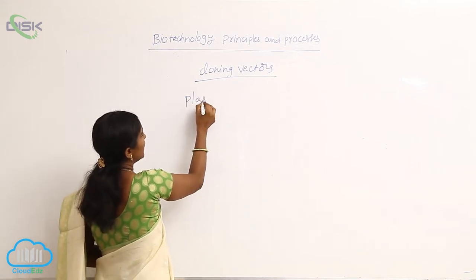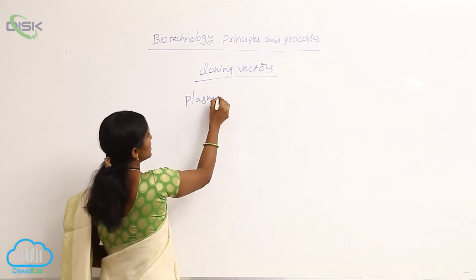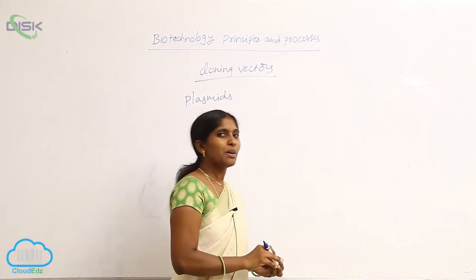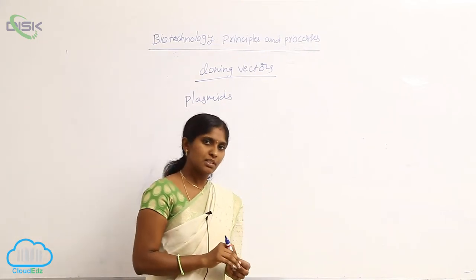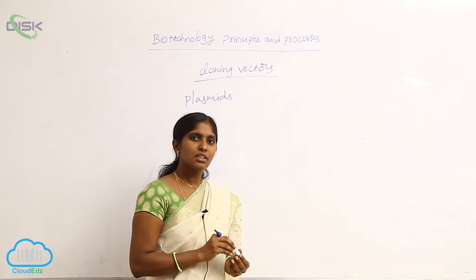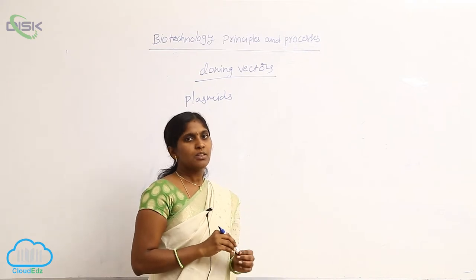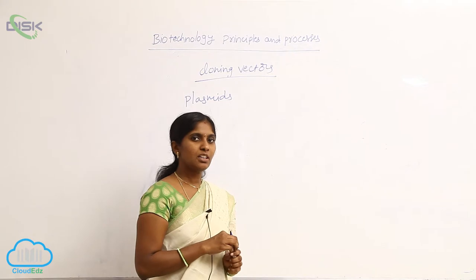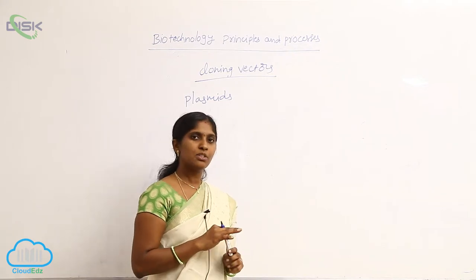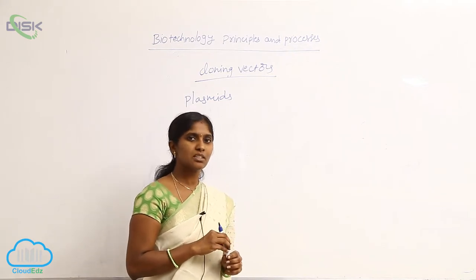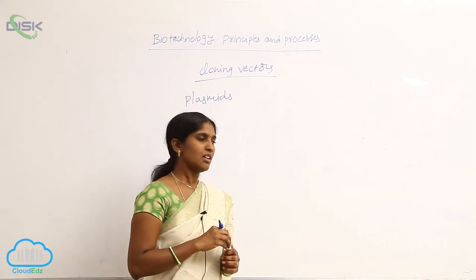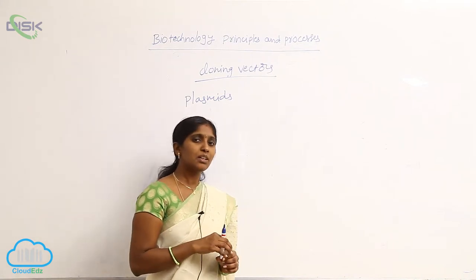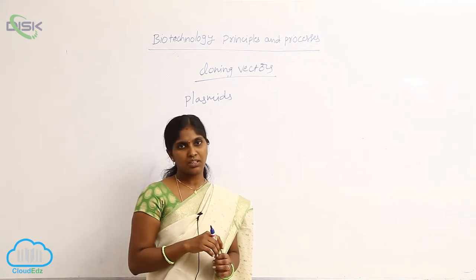Plasmids are ideal vectors used in rDNA technology. What is a plasmid? Where is it present? The plasmid is present in bacteria. It is a double stranded, circular, closed, extra-nuclear DNA. The copy number of plasmids varies from one bacterium to another.